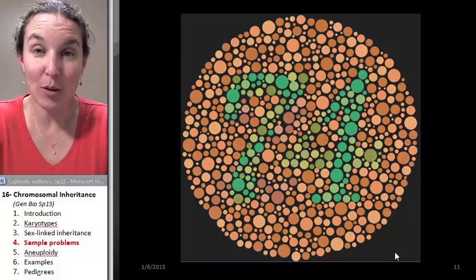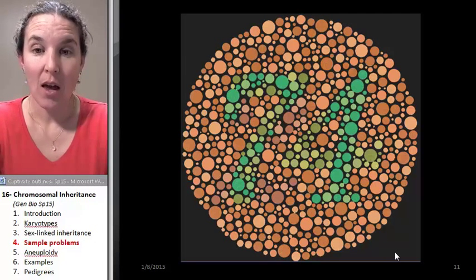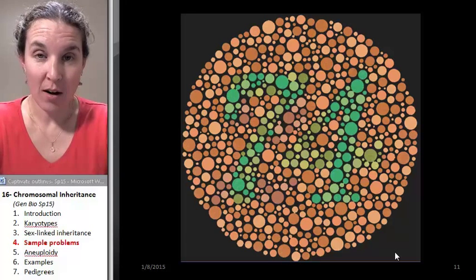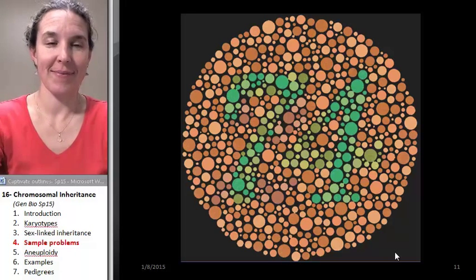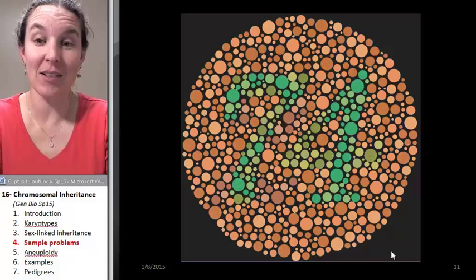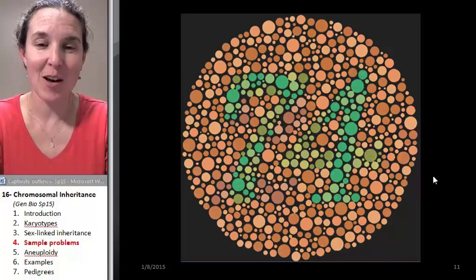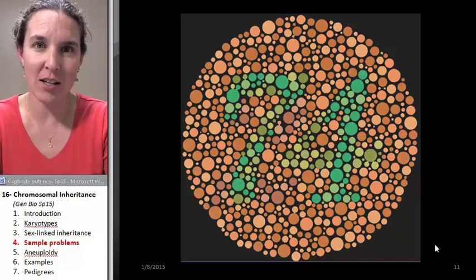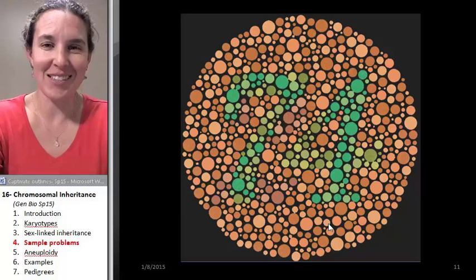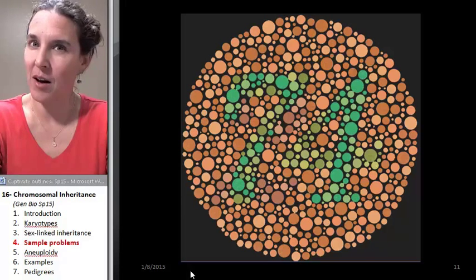All right. I'm going to give you a colorblindness problem. Can you see the number in there? It's illegal for me to diagnose you as colorblind. But this is like Ishihara's colorblindness plates that they use to diagnose whether or not you are colorblind.